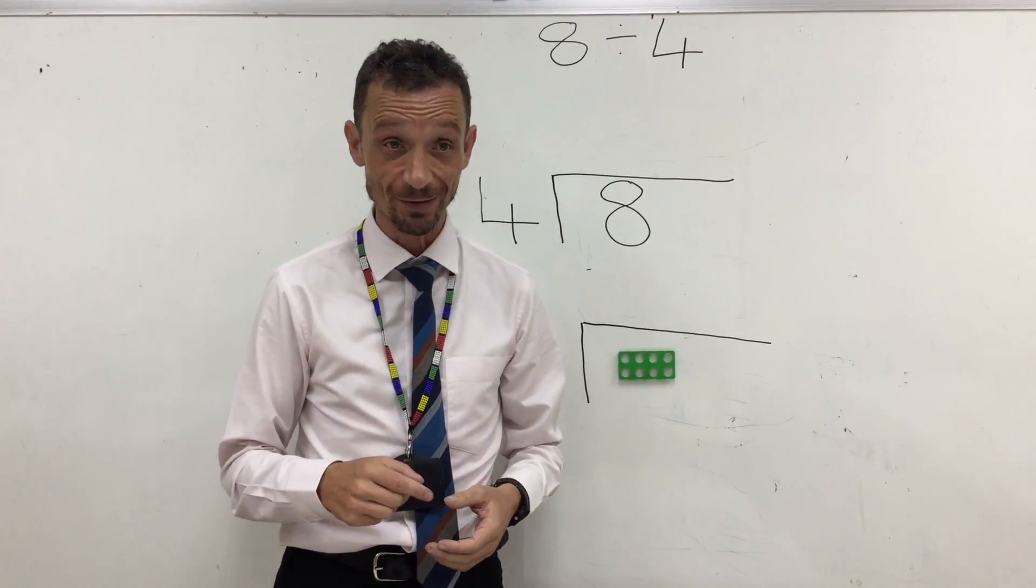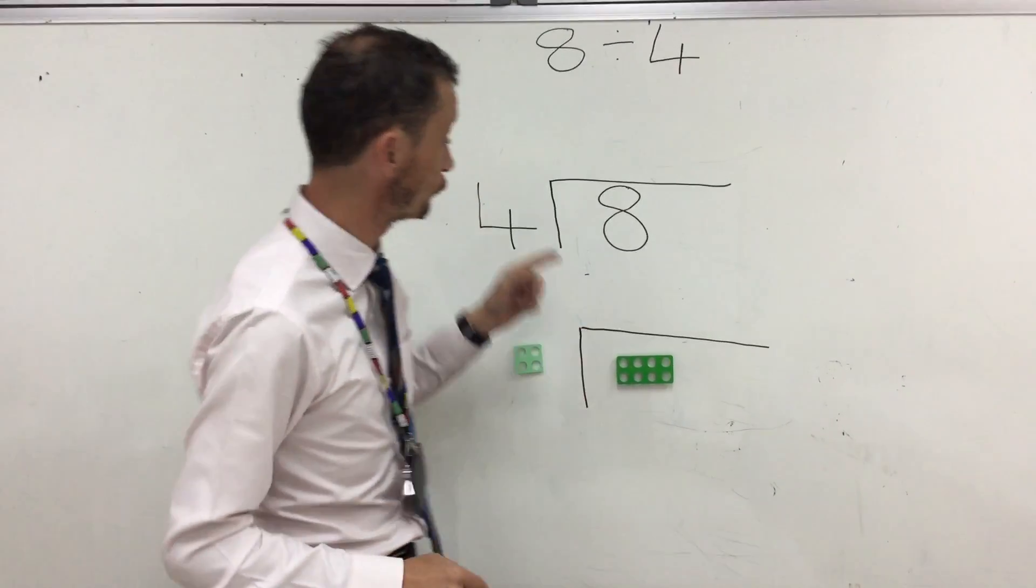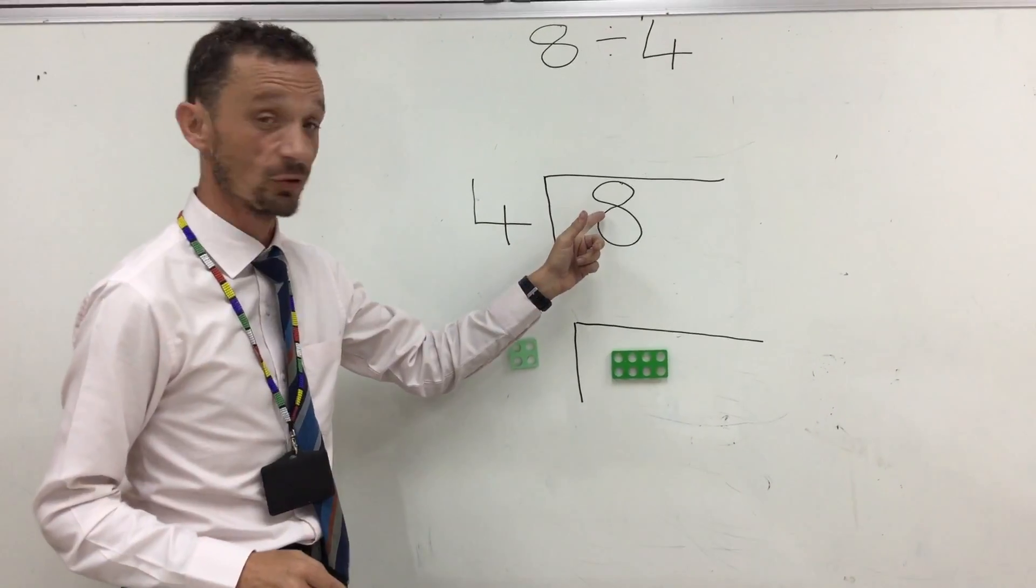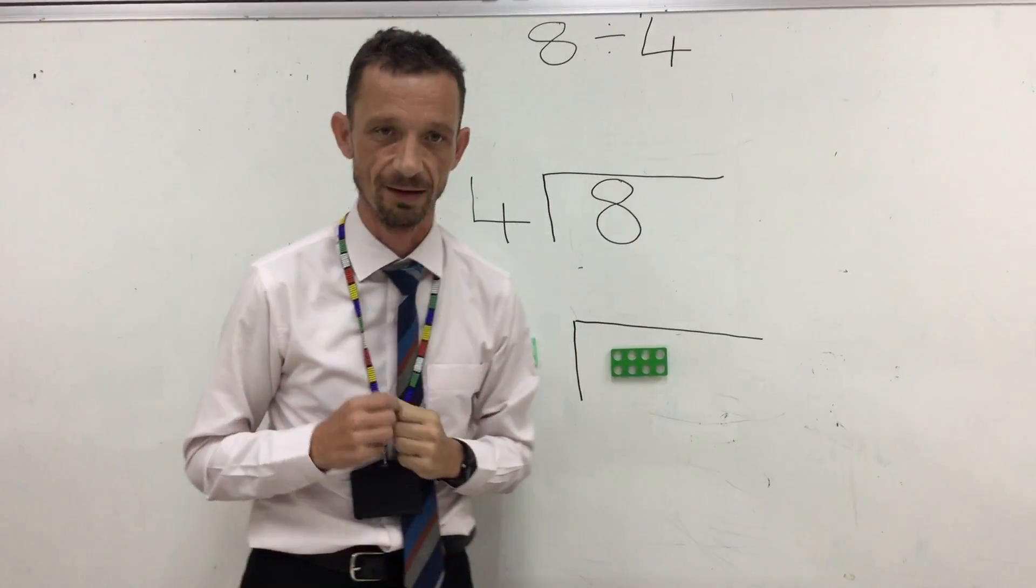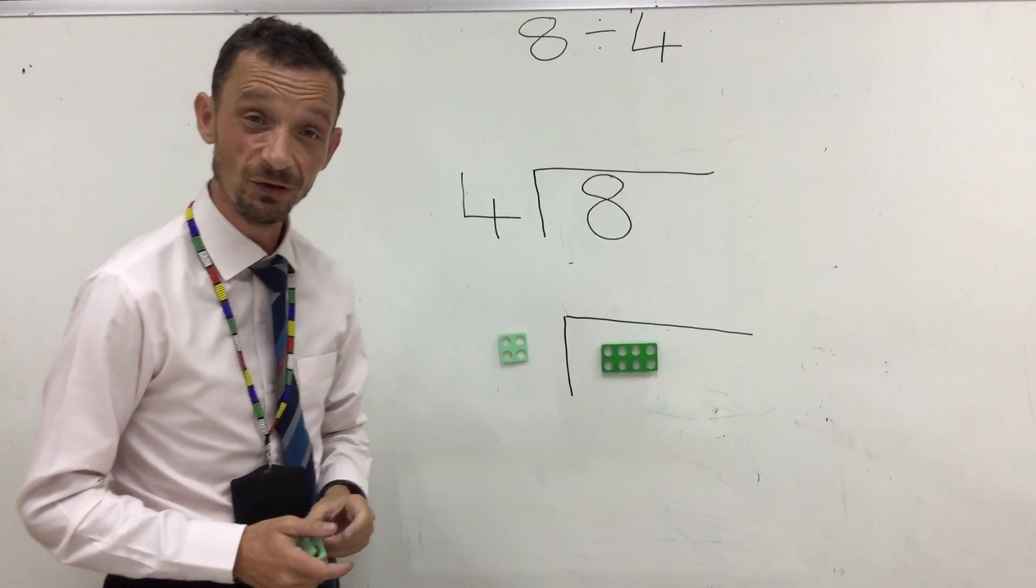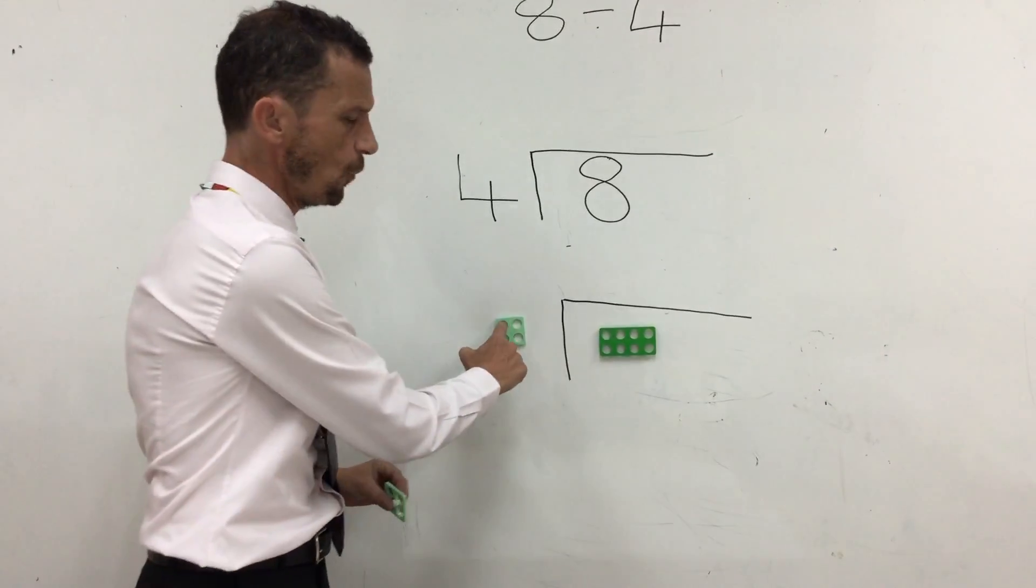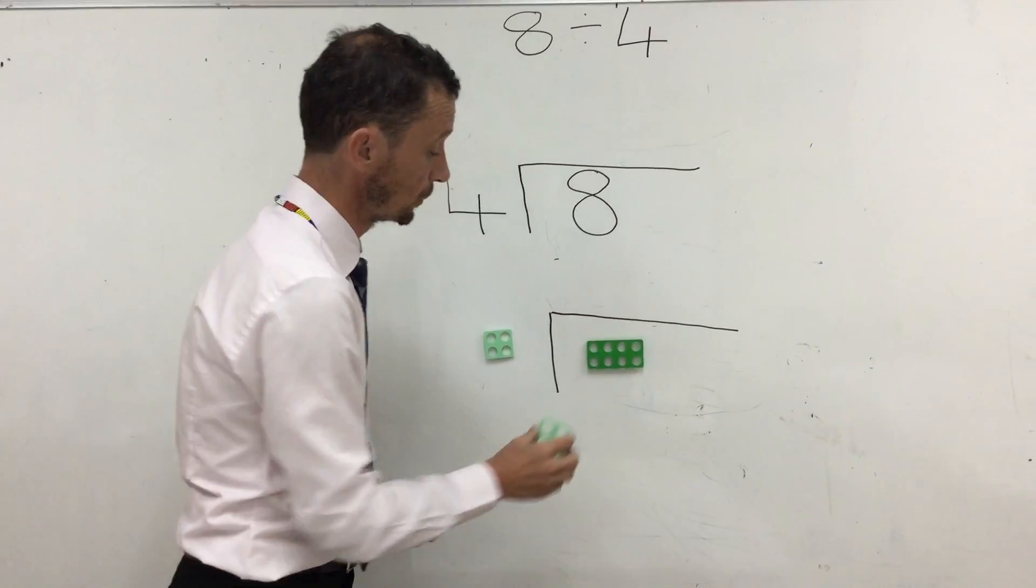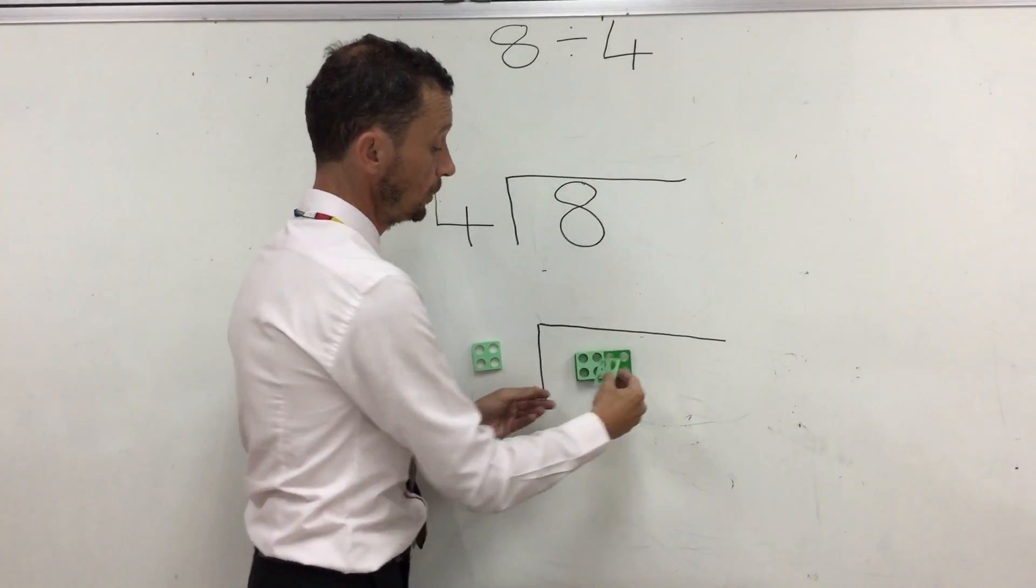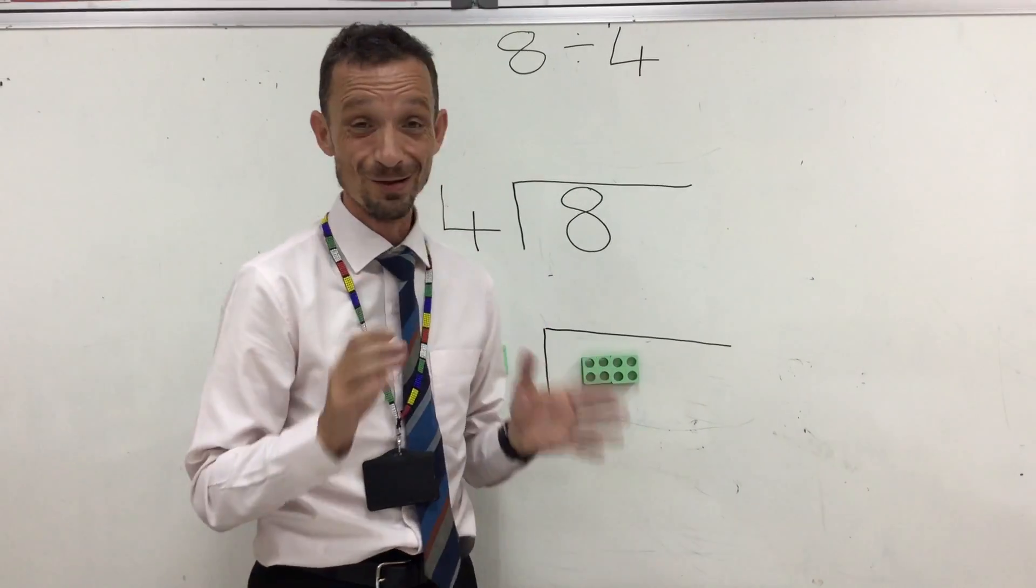The first calculation we're going to do is 8 divided by 4. The first thing you do is draw your bus stop, you put the largest number inside hiding in the bus stop and your 4 just before. Look, I've done it with Numicon. So let's see how many 4s we can get into 8. One 4, two 4s. That's right, the answer is 2.